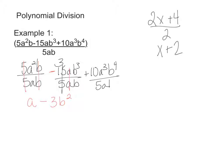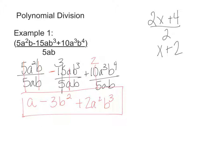And then my last term is plus 10A cubed B to the 4th divided by 5AB. 10 divided by 5 is 2, A cubed divided by A is A squared, and B to the 4th divided by B is B cubed. That's my final answer when dividing a polynomial — many terms — by a monomial — one term. Terms are separated by addition and subtraction.